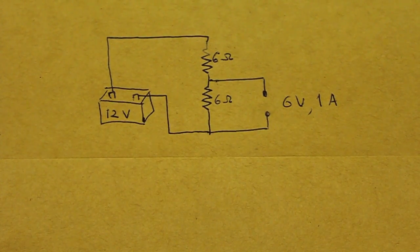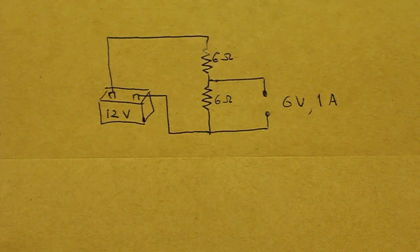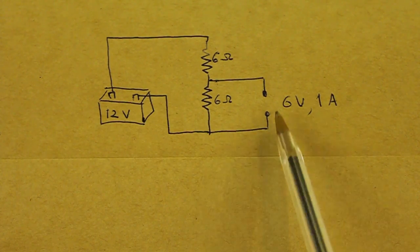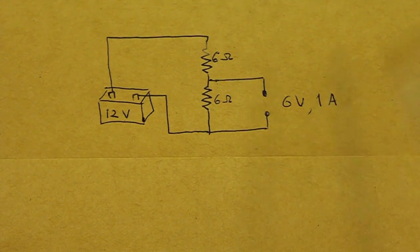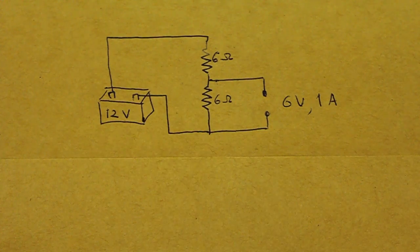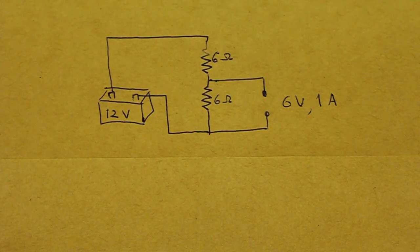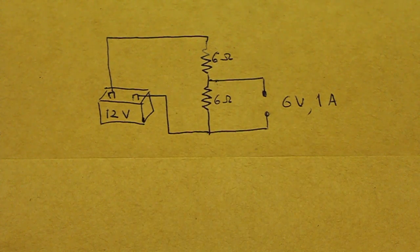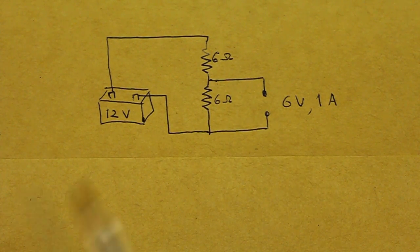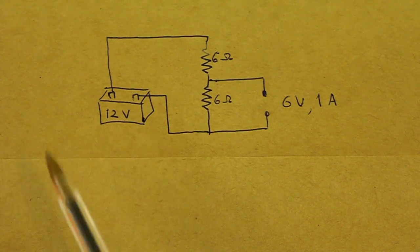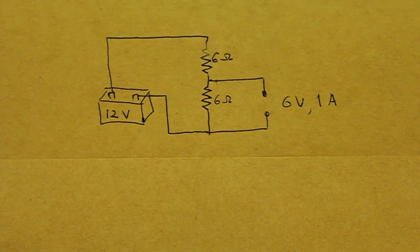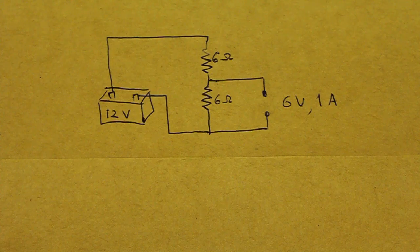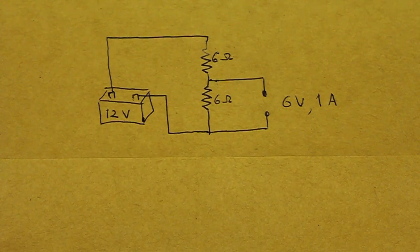The reason is the following. Imagine that you have a 12 volt battery, but you need 6 volts with a current of 1 amp. So you can think of making a voltage divider using two 6 ohm resistors. So using Ohm's law, current is voltage 12 volts divided by the total resistance, 12 ohms, and that will give you a current through the circuit of 1 amp.